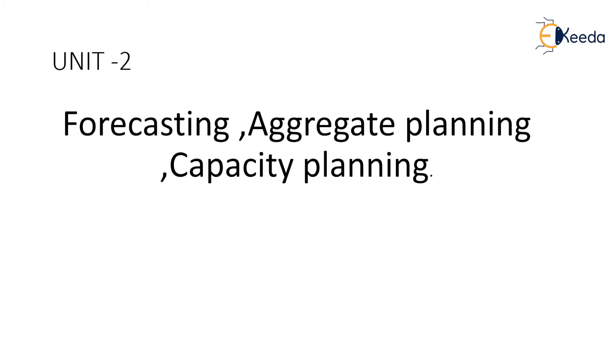Unit 2 consists of forecasting, aggregate planning, and capacity planning. Forecasting is the identification of the future — how the sales or products will be present and what are the methods for forecasting different products. Under aggregate planning, we will learn what planning methods are utilized to achieve proper production, and what capacity is to be stored or utilized.